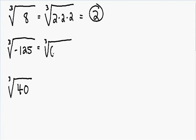We could rewrite this as negative 5 multiplied by negative 5 multiplied by negative 5. If you multiply negative 5 times negative 5, that gives you positive 25. And positive 25 times negative 5 is equal to negative 125. So the cube root of negative 125 is equal to negative 5.